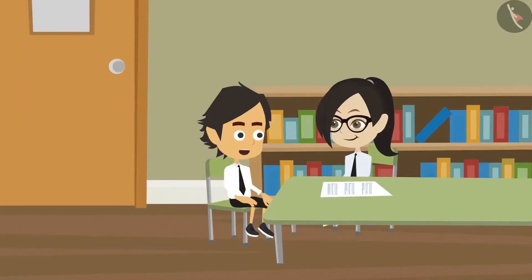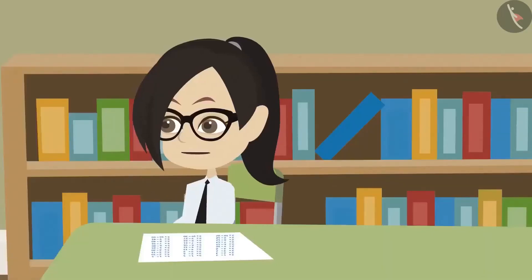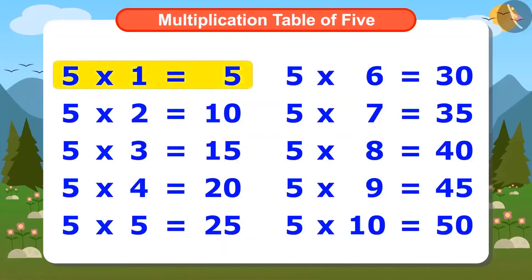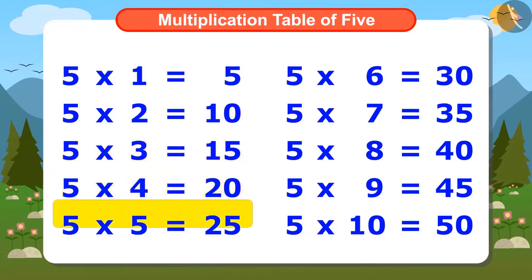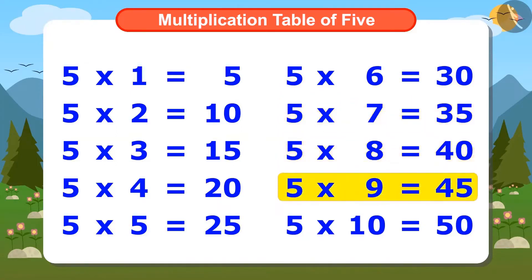Now I will try to memorize the multiplication table of 5 by reciting it: 5 ones are 5, 5 twos are 10, 5 threes are 15, 5 fours are 20, 5 fives are 25, 5 sixes are 30, 5 sevens are 35, 5 eights are 40, 5 nines are 45, 5 tens are 50.